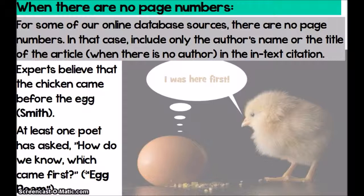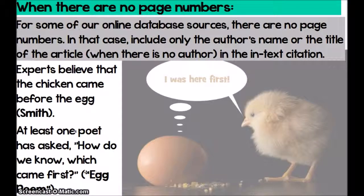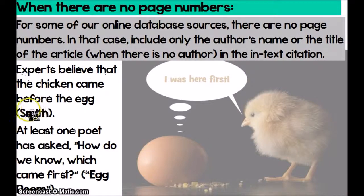Now we're going to talk about what we do when there are no page numbers. There are going to be instances where you are using online databases as your sources — websites and magazine articles that are just posted online. In most of those cases, there are not going to be page numbers for you to include. In that case, you're going to include only the author's name, or the title of the article when there is no author, in your in-text citation. For example: 'Experts believe that the chicken came before the eggs,' and then in parentheses I have just the author's name. The period is always going outside of the parentheses.